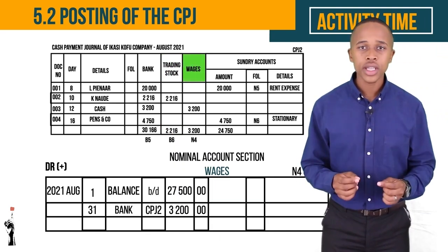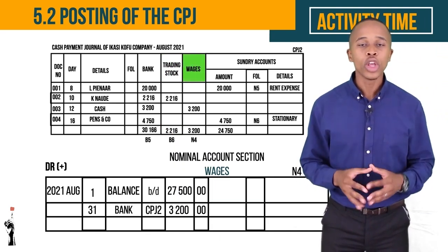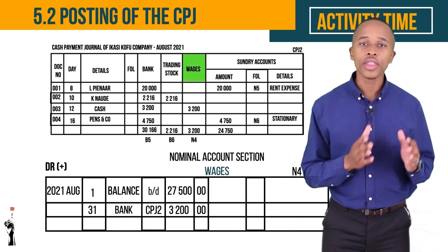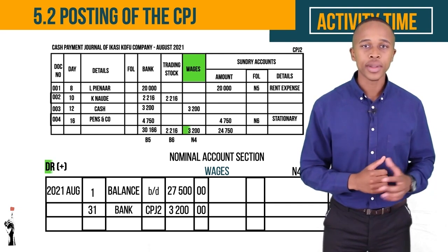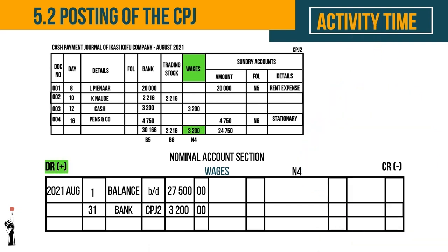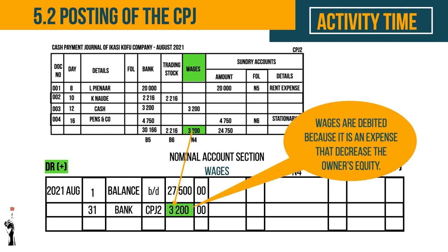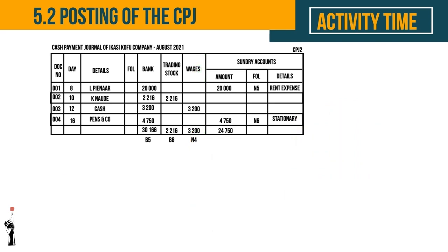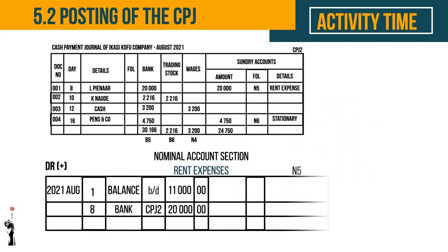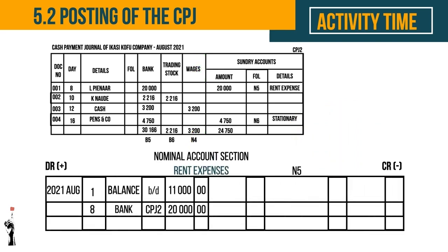The first nominal account we'll be looking at is wages. Wages is an expense, and when you bring the balance down this should be on the debit side. Wages is a column total, so we post the total at the end of the month. Wages are debited because it is an expense that decreases the owner's equity.